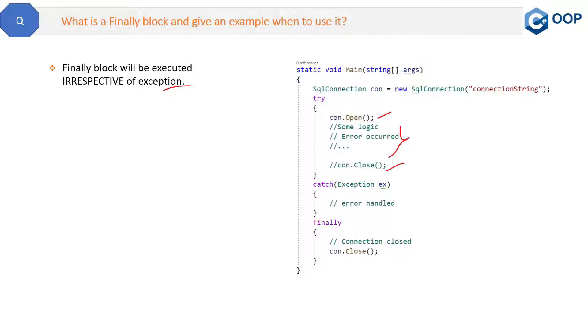So how you will make sure that this con.Close method should execute? Because if you have opened the connection, then you must close it whether any error will occur or not. So in that particular case you will use this finally block and you will write this con.Close method inside this finally block.